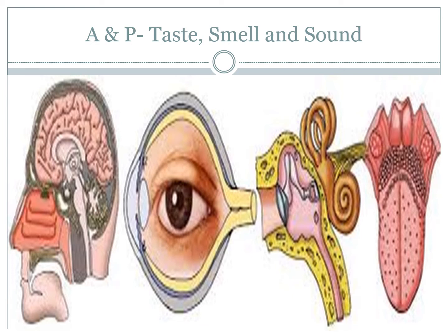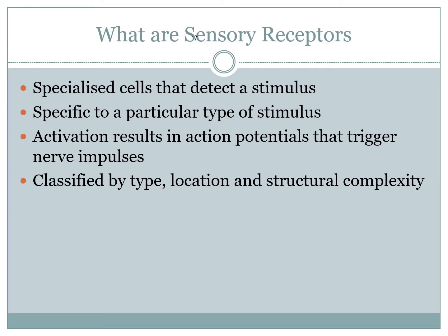Let's start by defining what special sensors are. There's a huge variety of sensory receptors throughout the body — they're specialized cells or structures of cells that can detect a certain stimulus. Each receptor is specifically designed to react to a particular type of stimulus, so you can't get mechanoreceptors activating to chemical responses and vice versa.